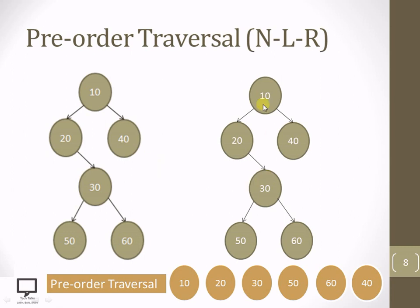We have covered all the nodes present in our tree. The pre-order traversal for the given tree is: 10, 20, 30, 50, 60, and 40. In this way, we have traversed the given tree.